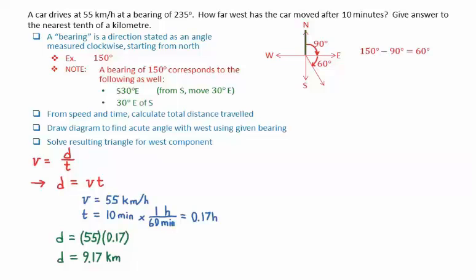We now have to figure out the west component of that distance. The bearing was 235 degrees. From north, we go around 90 degrees clockwise. Then another 90 degrees clockwise gets us to south. At this point, we've used up 180 degrees of the 235 degrees.